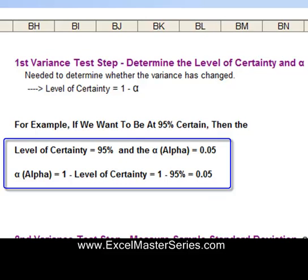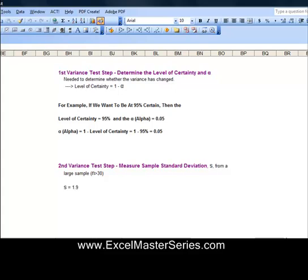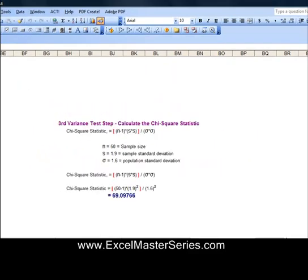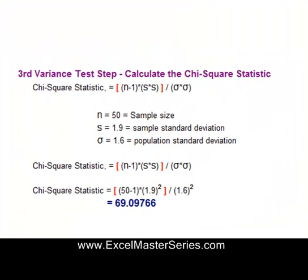In Excel: Step 1, the level of certainty is 95%, so alpha equals 1 minus 95%, which is 0.05. Step 2, we took a large sample of 50 and calculated the sample standard deviation to be 1.9. Step 3, calculating the Chi-Square Statistic — the three parameters are N (sample size) = 50, S (sample standard deviation) = 1.9, and sigma (population standard deviation) = 1.6. Plugging those into the formula, the Chi-Square Statistic is 69.